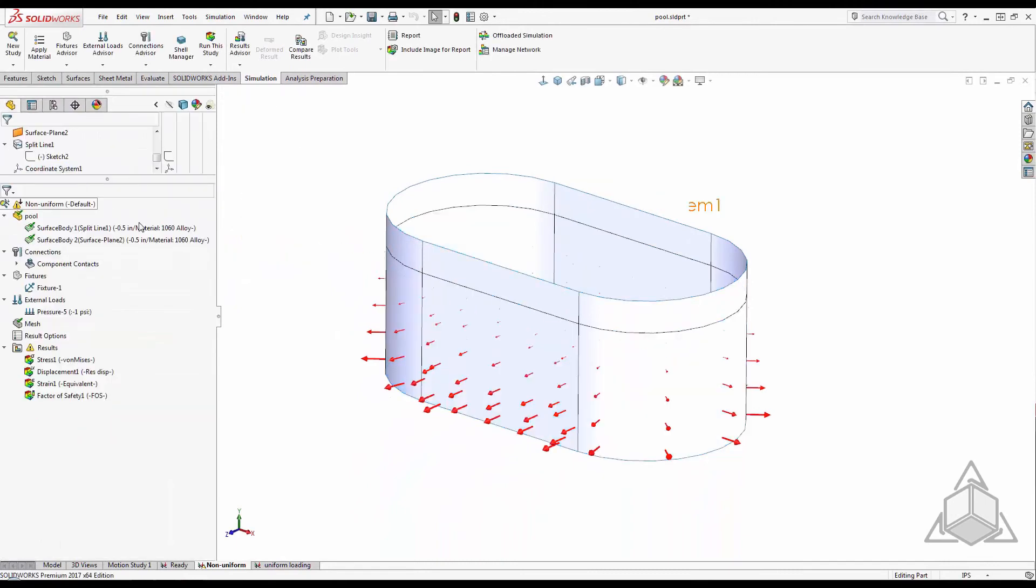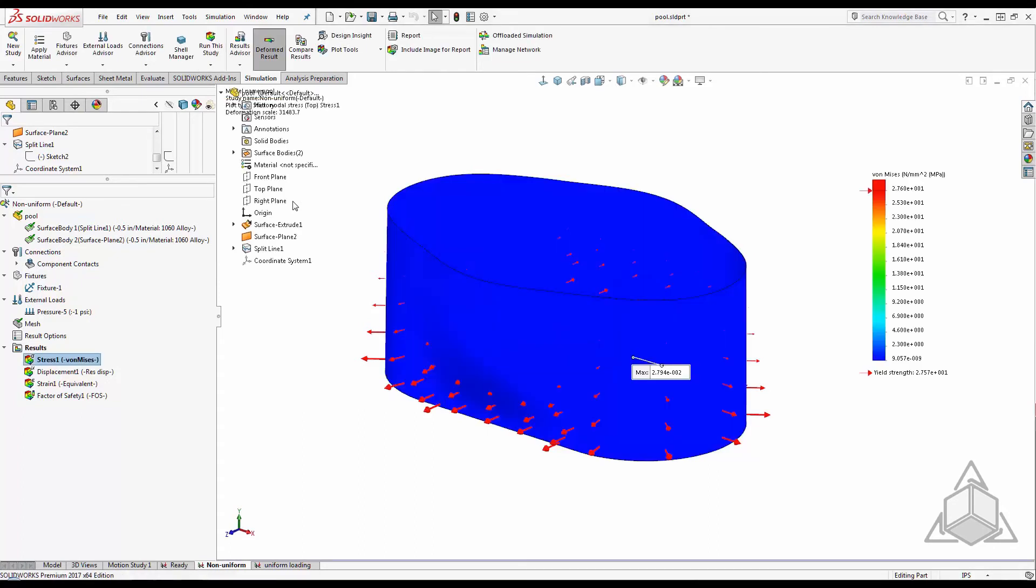Notice the arrows also update to show my pressure distribution. This is a handy feature I use to make sure my equation is correct. Let's run this study.